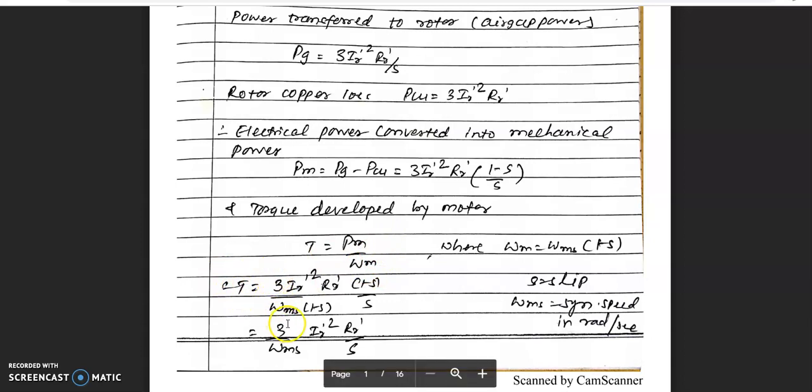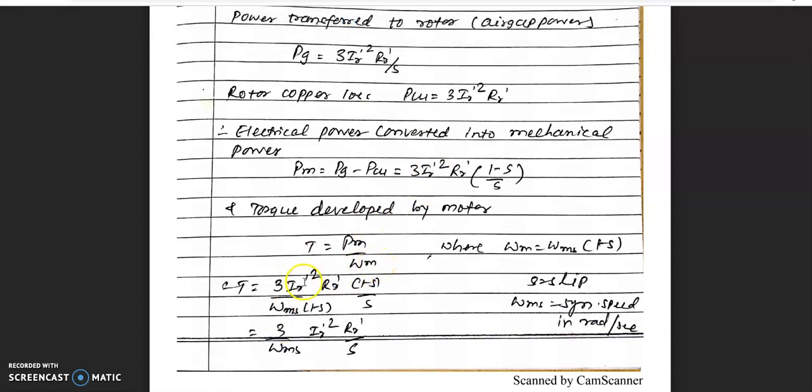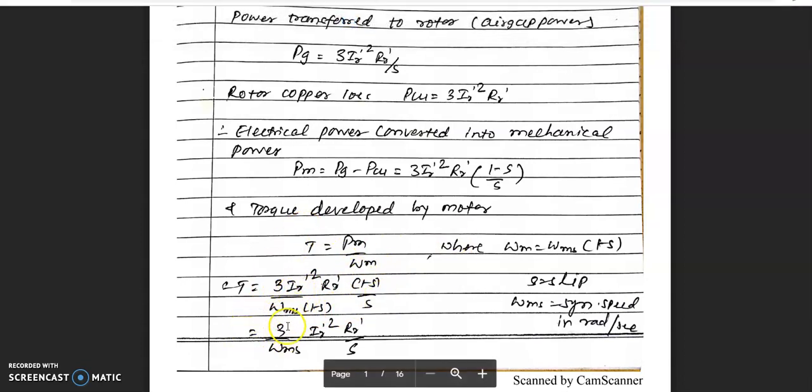We use the power equation divided by speed. The speed is given by synchronous speed times (1 - s). We can simplify this to get the torque equation: 3 divided by ωs, which is synchronous speed in radians per second, times rotor current squared times (R'r/s).